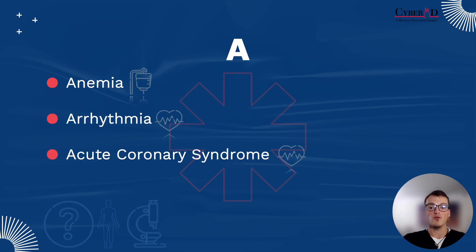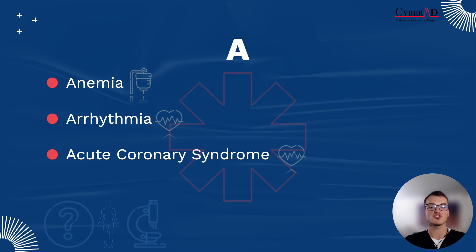Next up is A, which encompasses anemia, arrhythmia, and acute coronary syndrome — three diagnoses you definitely can't miss in patients with a chief complaint of weakness. For anemia, consider common routes of blood loss such as GI bleeds. Ask patients about blood in their stool, whether it has been bright red or black, and whether they have experienced any episodes of vomiting blood or coughing up blood since their weakness started.